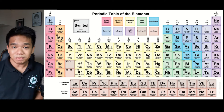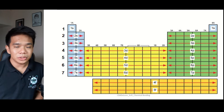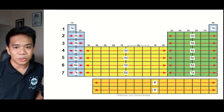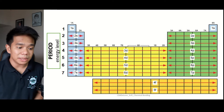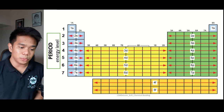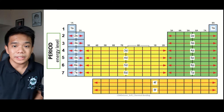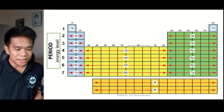Now let us look at the features of the modern periodic table. We have numbers found within the rows and columns. The first one is the period or the row number. We have seven rows within the periodic table, wherein this represents the energy level — with the exception of the D block elements, where in order to determine the energy level we need to subtract the row number minus one. For example, the energy level of fourth row elements in the transition elements are found within the 3D block.